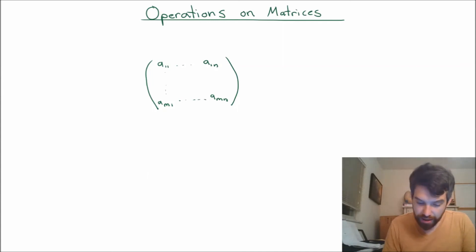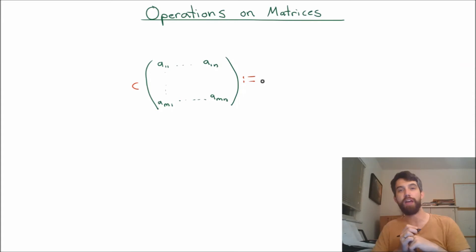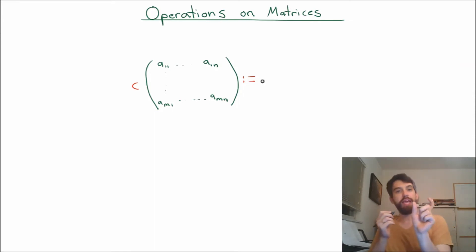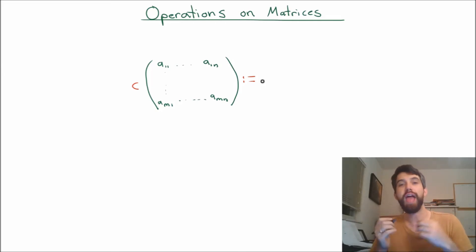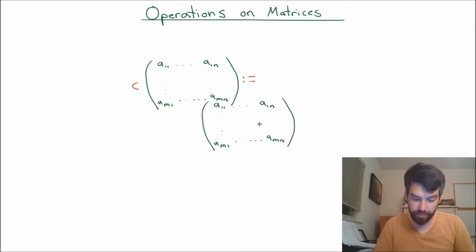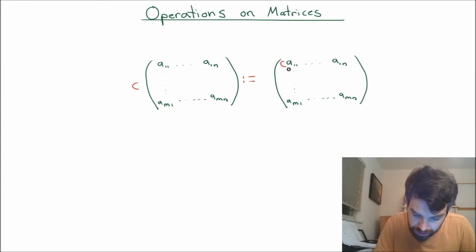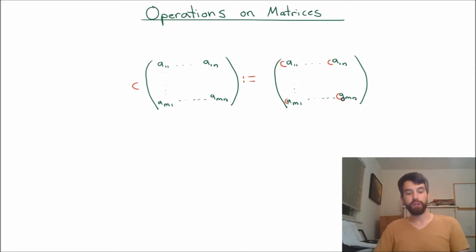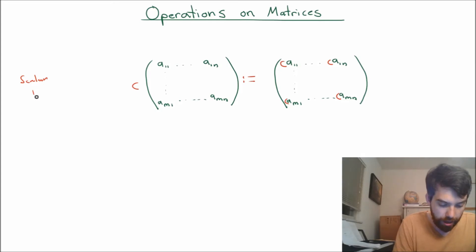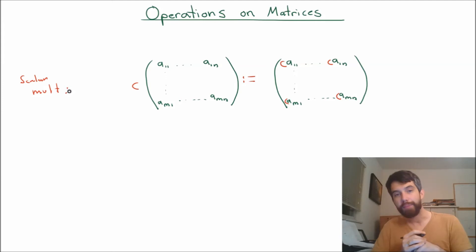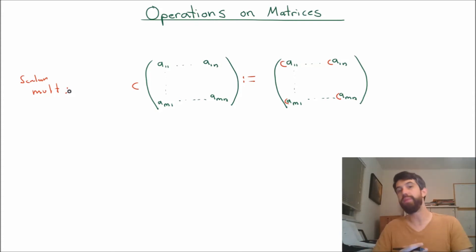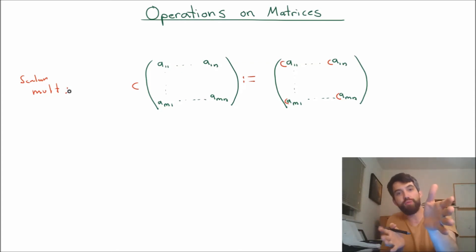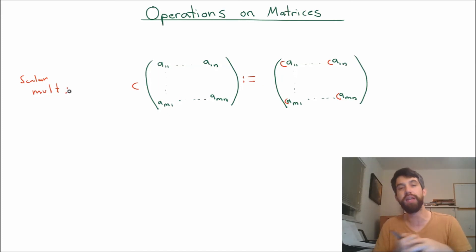The idea is to take a constant C, and the natural way to define it — using colon-equals to say we're defining the left by the right — is to take the coefficient C and multiply it into every single entry of the matrix. So scalar multiplication of a matrix works by distributing C across all entries. This is quite natural: if a matrix is thought of as a transformation, then C times the matrix takes whatever the transformation did — maybe it rotated, stretched, or sheared — and then multiplies the resulting vectors by the scalar C.